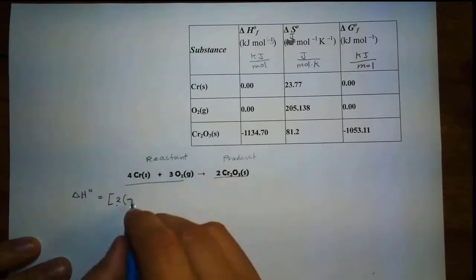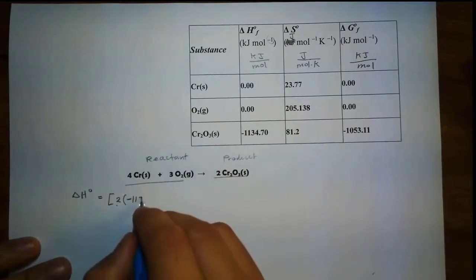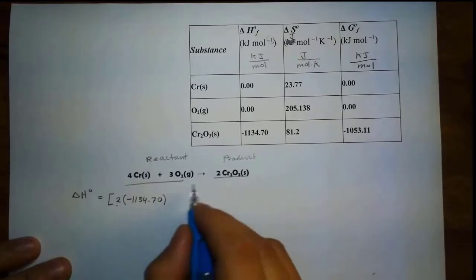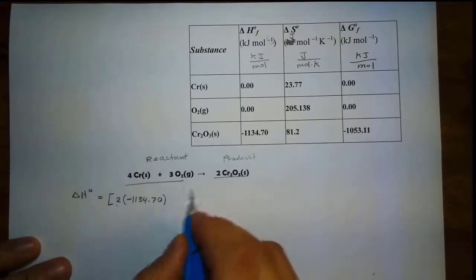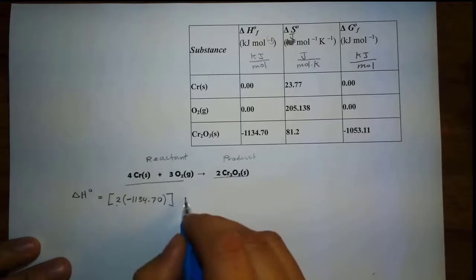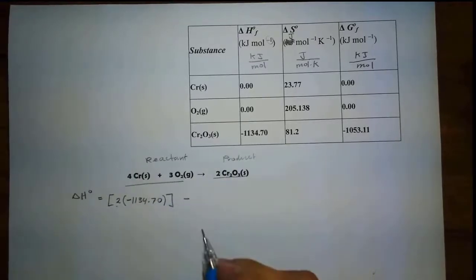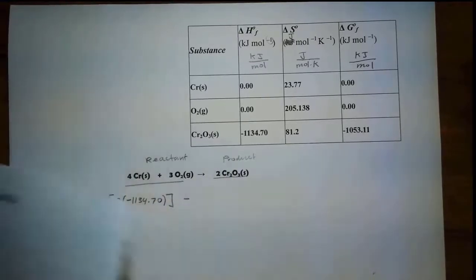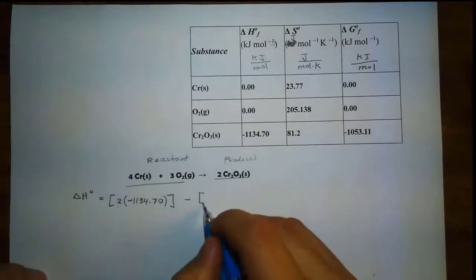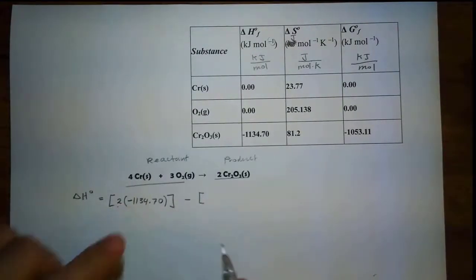We have two moles of this compound, so I can say I have two moles of that compound. The value for delta H formation is negative 1134.70. That's all I have for the product, and that product is going to subtract the reactant — just like we have here: product minus reactant.